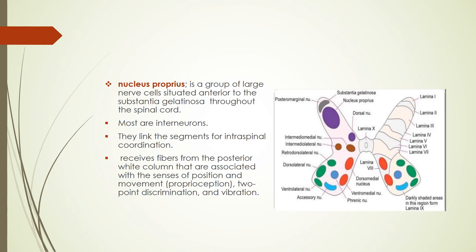The next group is nucleus proprius — a group of large nerve cells situated anterior to substantia gelatinosa — which also extends throughout the length of the spinal cord. Most of the neurons in this group are interneurons, which are neurons that connect other neurons. They link segments of the spinal cord for intraspinal coordination. They also receive fibers from the posterior white column associated with proprioception, two-point discrimination, and vibration, though these fibers do not synapse here but supply collateral branches while passing through.